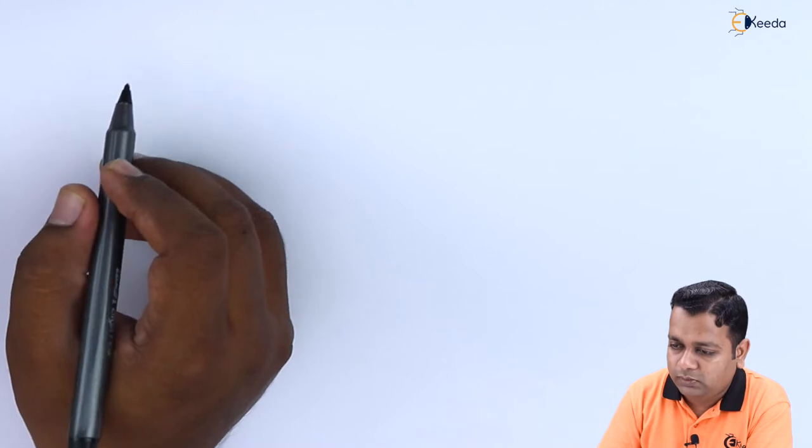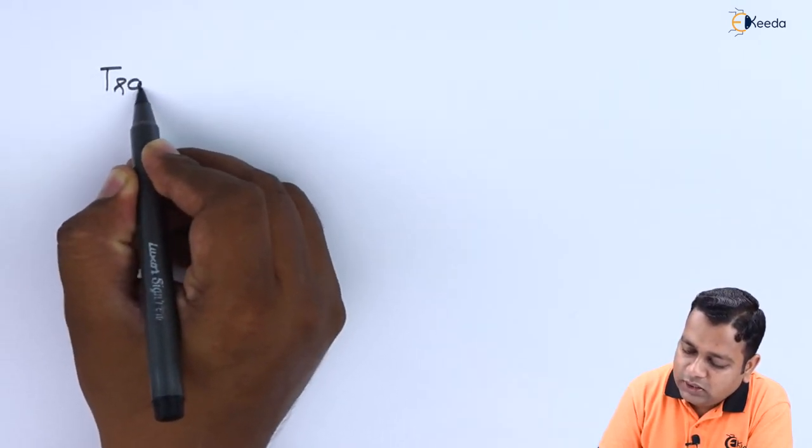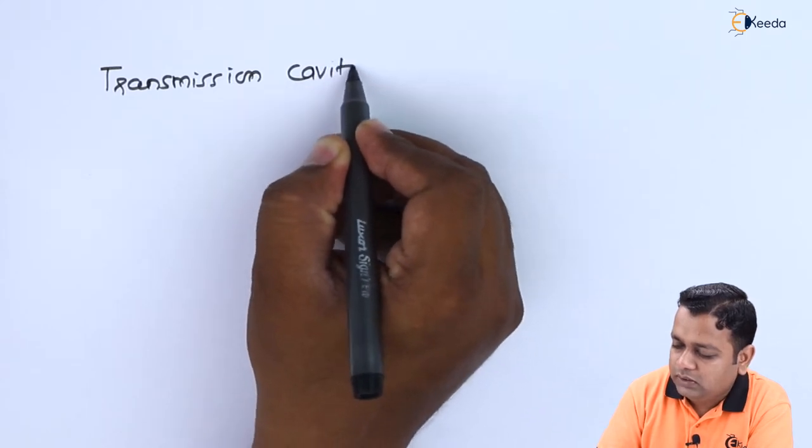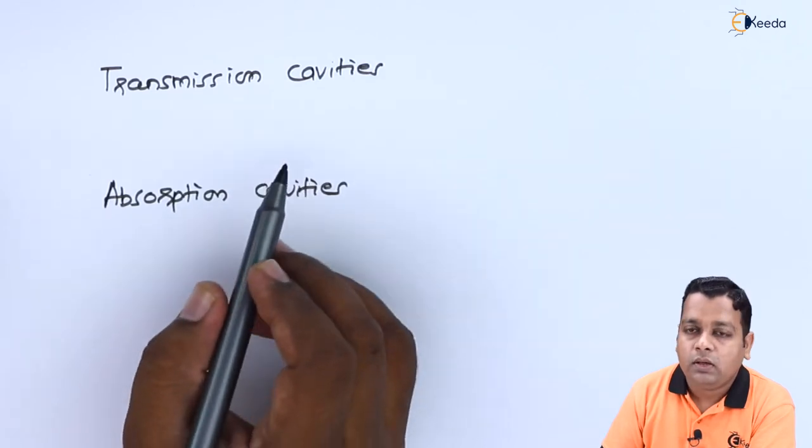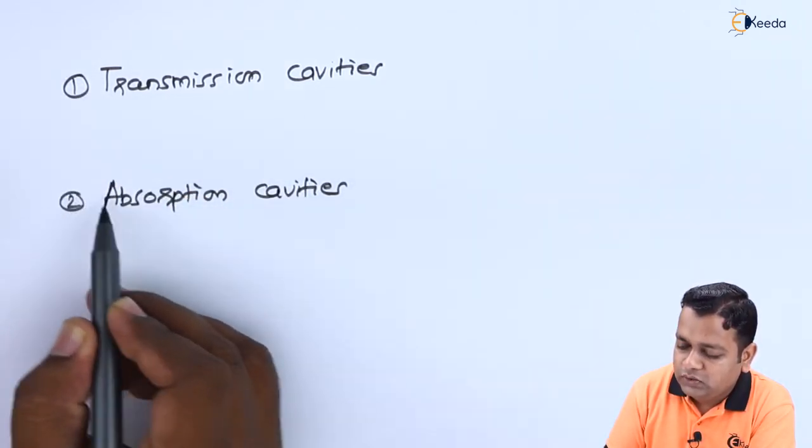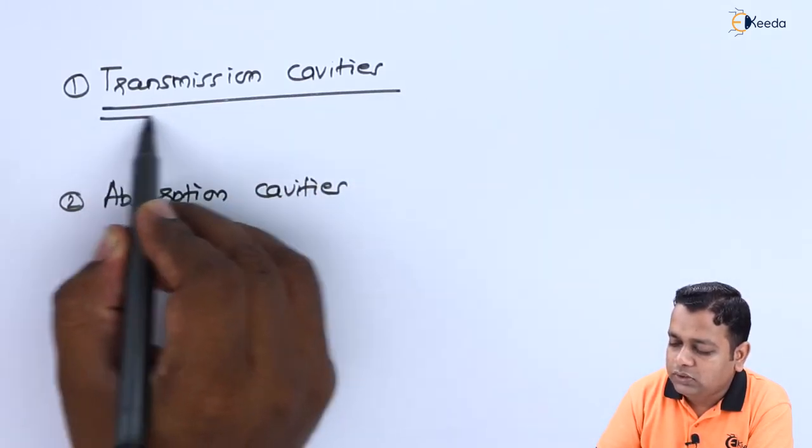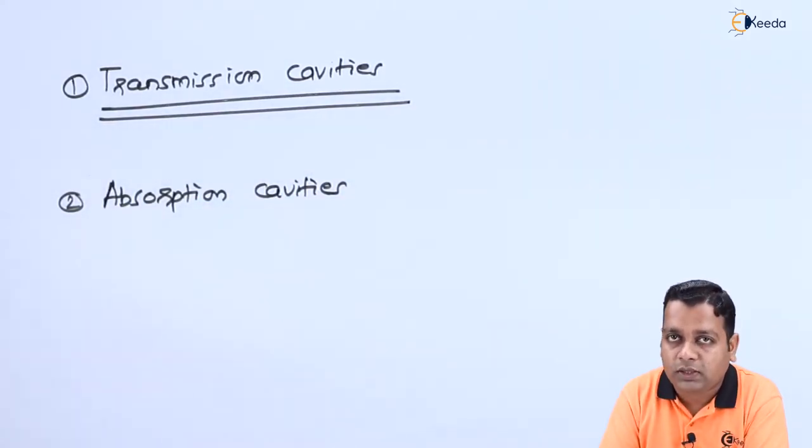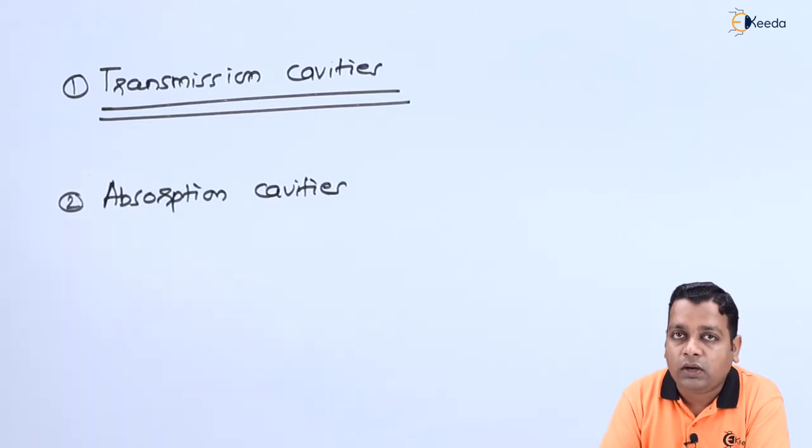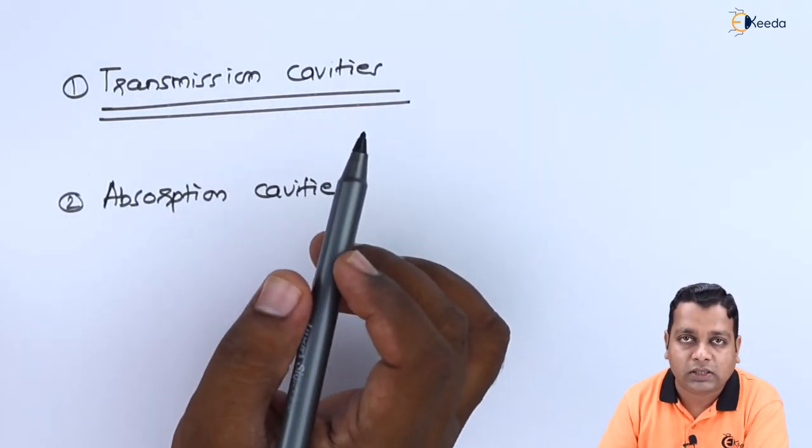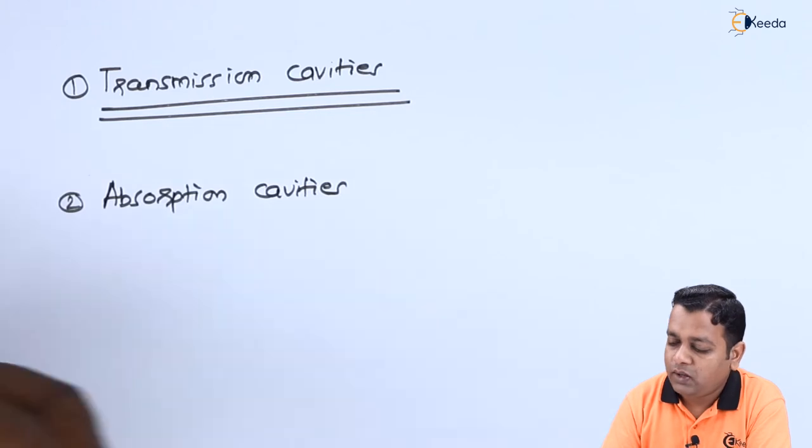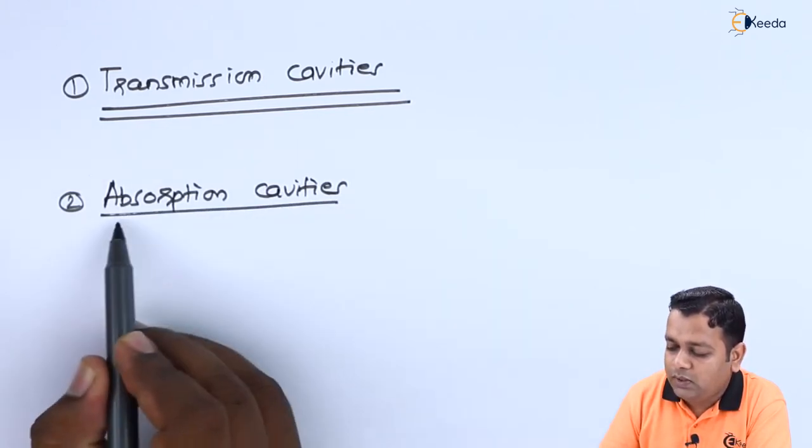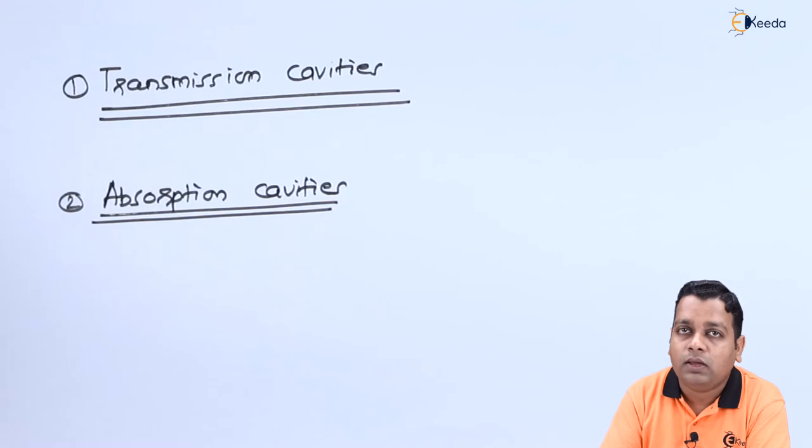This is the transmission cavities and this is the absorption cavities. From the name of these two types it is very clear that if we are going to use the transmission cavities for the purpose of this wave meter, so that time it will allow the transmission of the microwave signal without any kind of attenuation or losses to that particular signal, whereas the absorption cavities try to have the complete absorption of the microwave signal at the time of measurement.